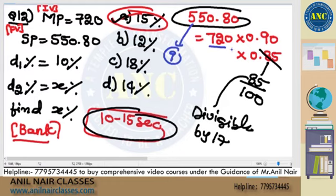Market price is 720. Selling price is always the final value. 550.80 is obtained because discount is applied. On market price, 720 into 10% discount, 10% discount will be 0.9. Second discount, I don't know.